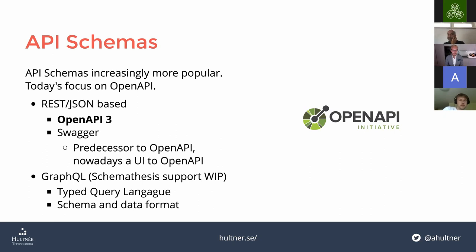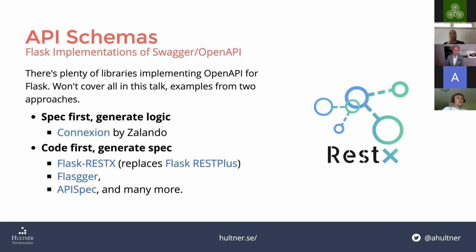Then there is GraphQL, which is a completely different query language and data format that includes schemas from the get-go. I'm not going to go too deep into that, but it's something we are working on in Schemathesis. There are two popular ways of using API schemas: either spec-first — you generate logic from the spec connected with your app — or code-first, where you generate specifications from the code.